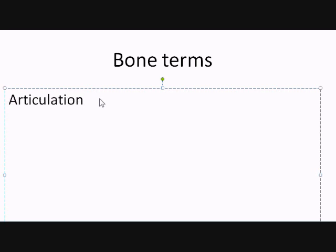Some parts of the body are movable and some are immovable. When bones come together we refer to that as being able to articulate — that is what a joint does. The connection where they meet, they articulate. These articulation points form joints that have different degrees of movability, or mobility.